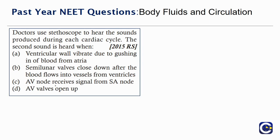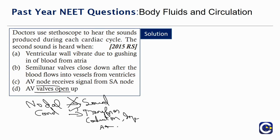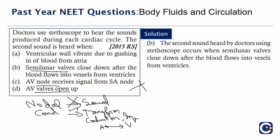Let's eliminate options. Nodal conduction does not contribute to any sound — it only contributes to the conduction of impulses from atria to ventricles. The ventricular valve vibrating due to gushing blood is also not a fact. The sounds are basically due to the semilunar valves. The second sound is due to the semilunar valves closing — when semilunar valves close down after blood flows into the vessels from the ventricles.